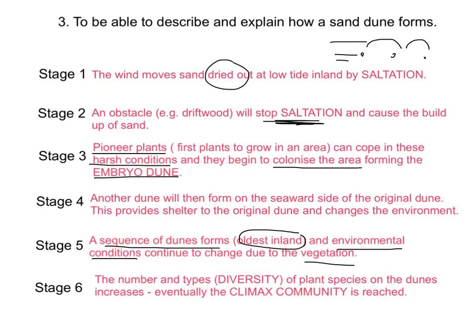Stage six: because of these changes through stages one to five, the number and types — also known as diversity — of plant species on the dune has increased over time. There are very few plants in the embryo dune, but as we move inland we get greater species diversity, until we reach what is called the climax community — usually fir, ash, or birch trees. Make sure you have these six stages as a flow diagram in your notes.